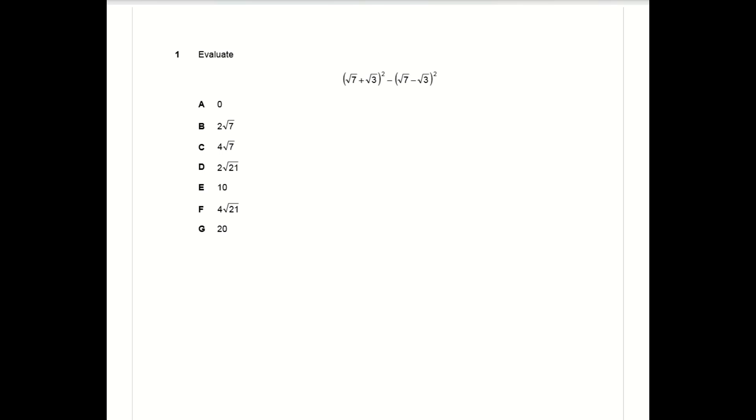Question one is a pretty straightforward maths question as long as you spot that you're working with the difference of two squares. So a squared minus b squared factorizes into a plus b times a minus b, and when you plug in the numbers you should get your answer as F.